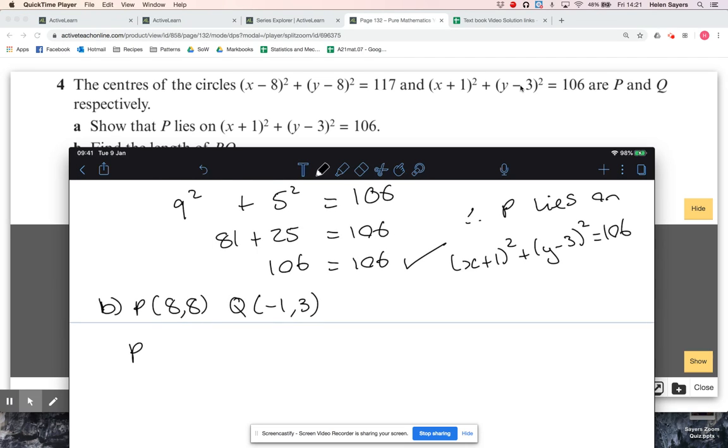So the magnitude of the line PQ, it's going to be... basically I'm just doing the distance between those two points. So (8 - (-1))² + (8 - 3)².